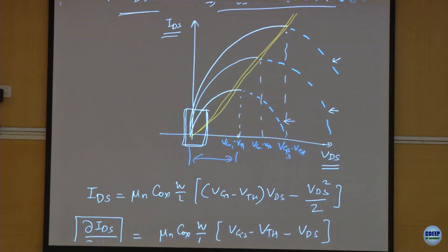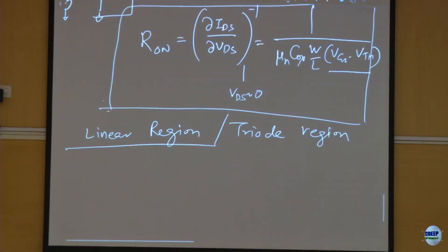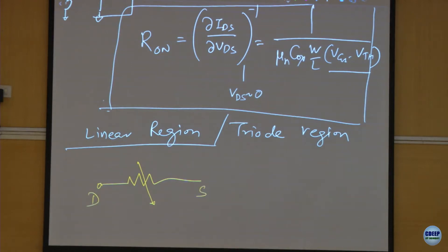This particular part of the curve is called the linear region or triode region — this is one area where the MOSFET is operating. You can also represent this as a resistor between drain and source where applying VGS increases the conductance: if VGS increases, the resistance will drop.